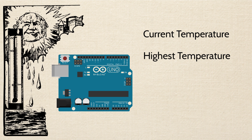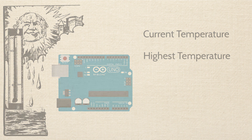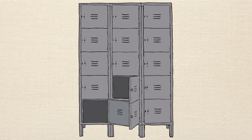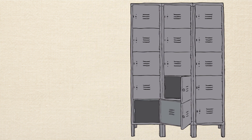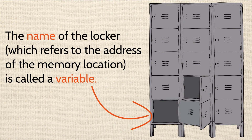But how do we actually save this information in a sketch, and how do we recall it when we need it? In order to do this, we need to use the memory. Think of memory as a big wall of lockers, and you can use the lockers to store something. When you need that something again, you just go back to the locker and grab it. To remember which locker you used, all we have to do is give the locker a name. And the name of the locker — the place where you actually put stuff to store it — is called a variable.